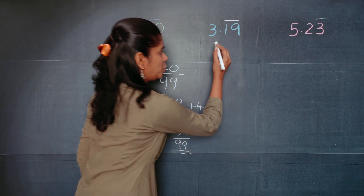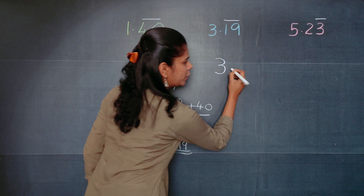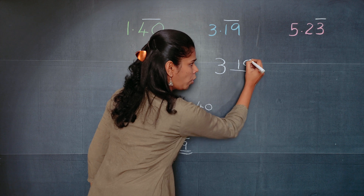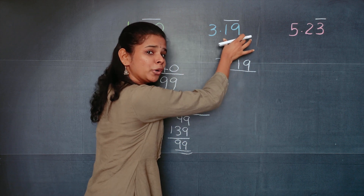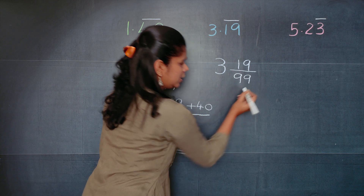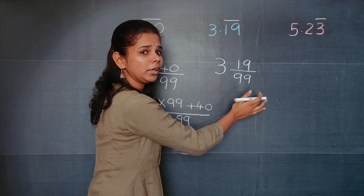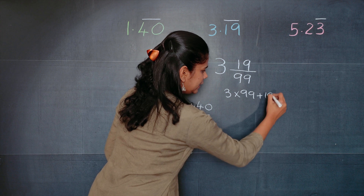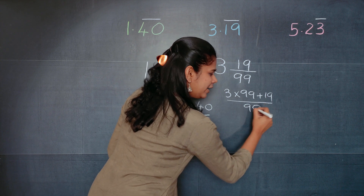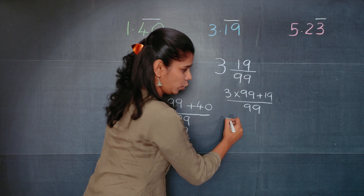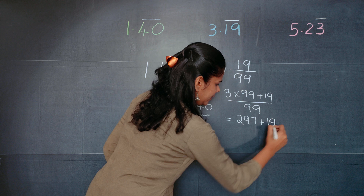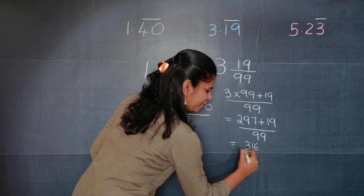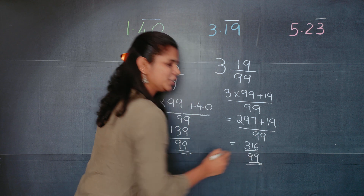Moving on to the second question: write 3 here and draw a line in the middle. Then write 19 on top, and since two numbers are under the bar, write 99. Same concept — convert it: 3 multiplied by 99 plus 19, the whole divided by 99, equals 297 plus 19 divided by 99, which is 316 by 99. So this is your answer.